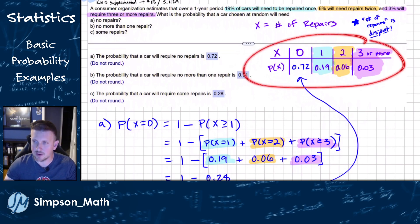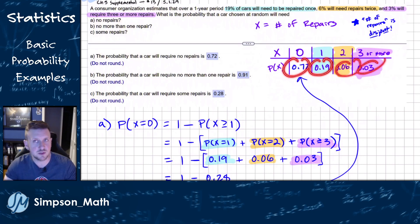So I made a little probability model here. We know that probability models, each probability needs to be valid, meaning it's between zero and one, and they all need to add up to one. So from the problem, 19% will be repaired once, 6% will have two repairs, and 3% will have three or more. They do have that or more part because there might be four or five, 12 repairs.